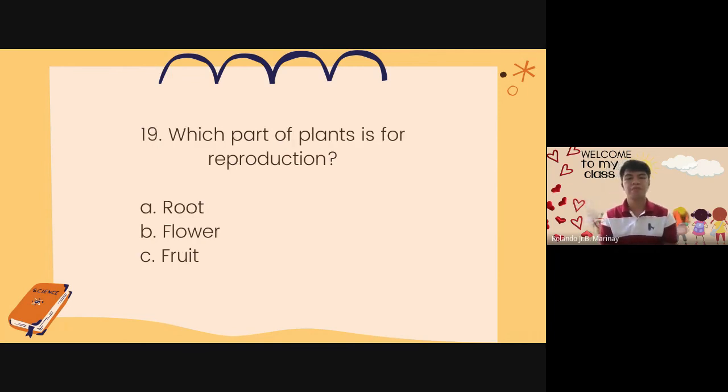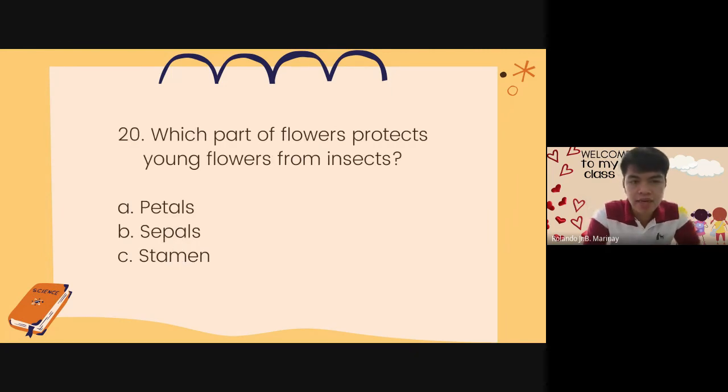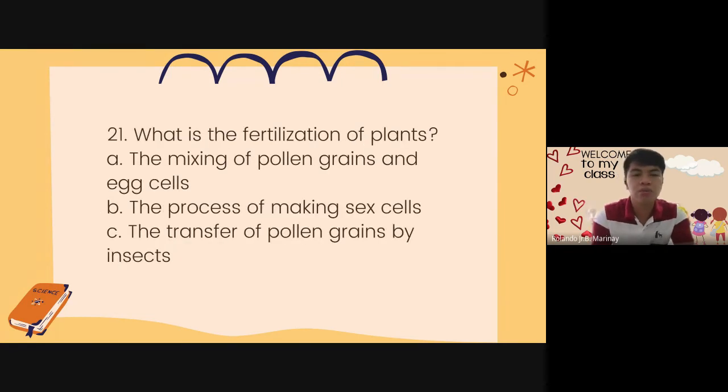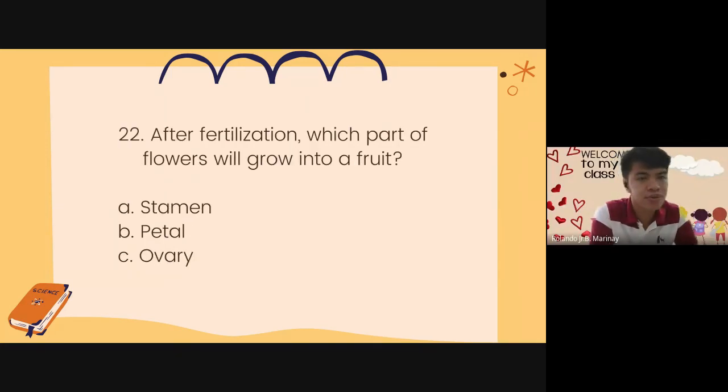Number 19. Which part of plants is for reproduction? A. Fruit. B. Flower. C. Root. Number 20. Which part of flowers protects young flowers from insects? A. Petals. B. Sepals. C. Stamen. Number 21. What is the fertilization of plants? A. The mixing of pollen grains and egg cells. B. The process of making sex cells. C. The transfer of pollen grains by insects. Number 22. After fertilization, which part of flowers will grow into a fruit? A. Stamen. B. Petal. C. Ovary.